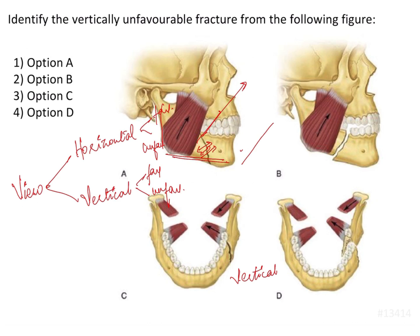If the pull is such that there is closure of the fracture space — because the fracture line is going to be closed by the action of the muscles — you can do a closed reduction with maxillomandibular fixation. You do not have to open up and place a bone plate. Whereas the other case is a horizontally unfavorable fracture requiring open reduction.